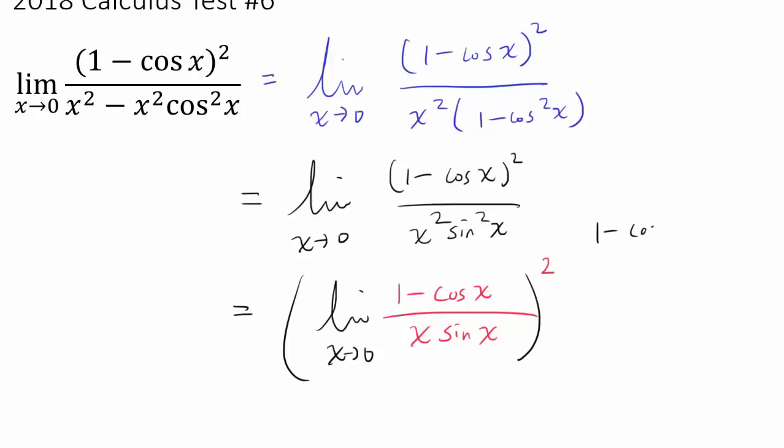There is a classic way of making the expression 1 - cos x disappear. And that's multiplying by 1 + cos x. Because when you multiply this by 1 + cos x, you're going to get 1 - cos² x, which is going to be sin² x. So let's do that.